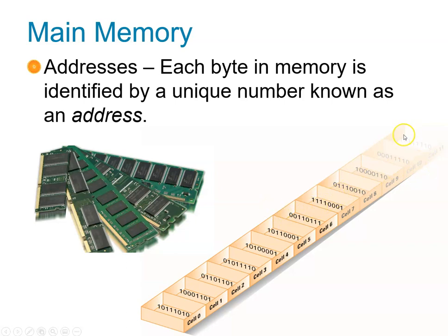Main memory is all about addresses and the content of those addresses. Each byte in memory is identified by a unique number known as an address — cell 0, cell 1, cell 2, and so on. You will not see the same address repeated; it's unique. That's why we call it random access memory — you can randomly jump into any address, say cell 1 or cell 8, and access the content in it.